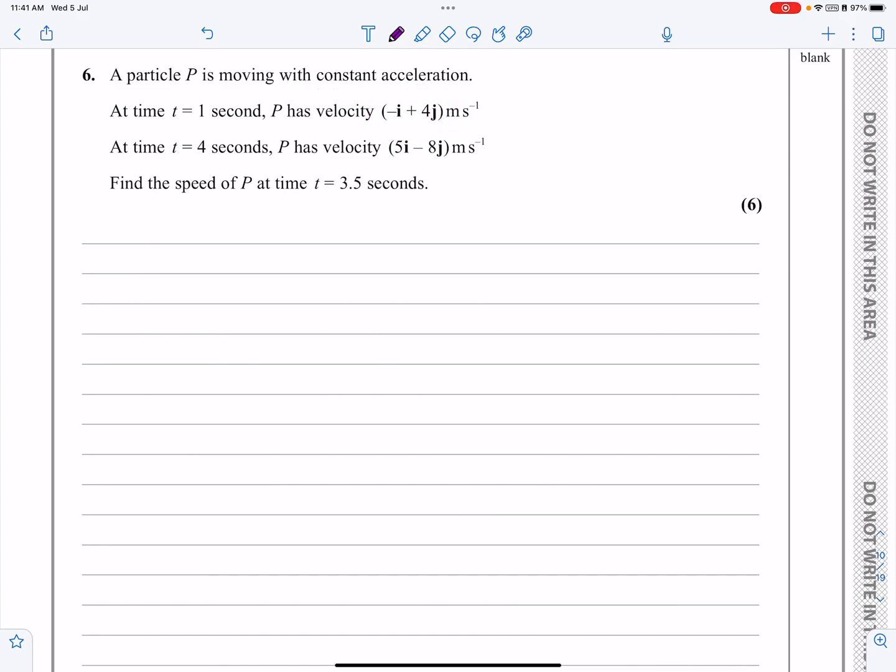A particle is moving with constant acceleration. At t equals one second, it has velocity minus i plus 4j. At t equals four seconds, it has velocity 5i minus 8j. Find the speed at time t equals 3.5 seconds.